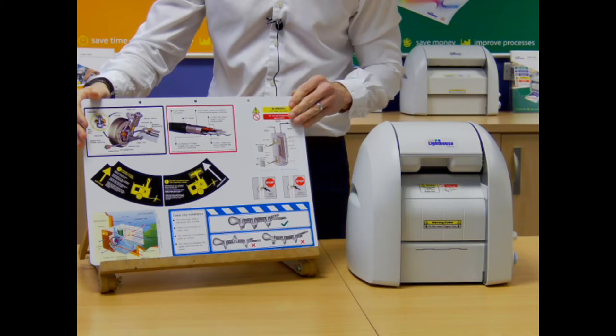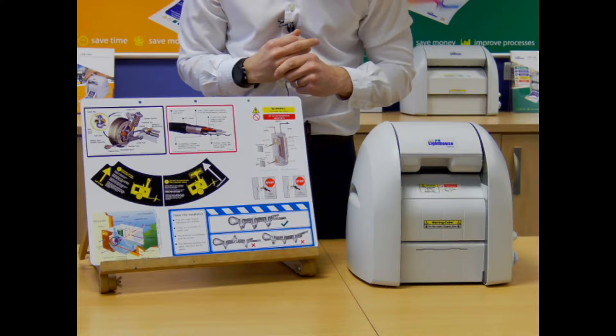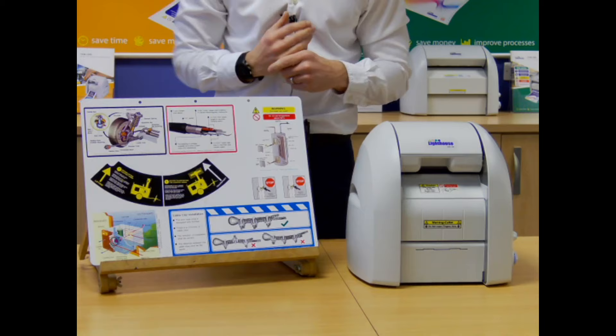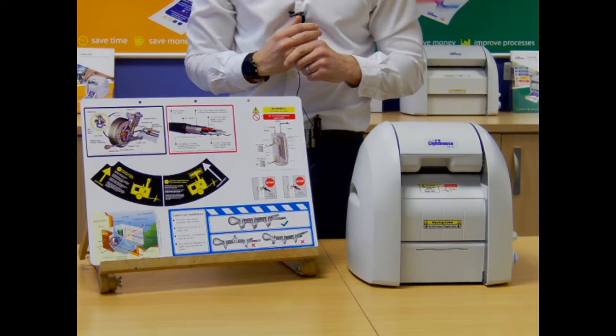Again, sort of similar theme on the other side. You've got operator instructions on here, standard operating procedures. And again, you can cut it into a recess. So it means it's just not a standard size label. We've got that detail in there.